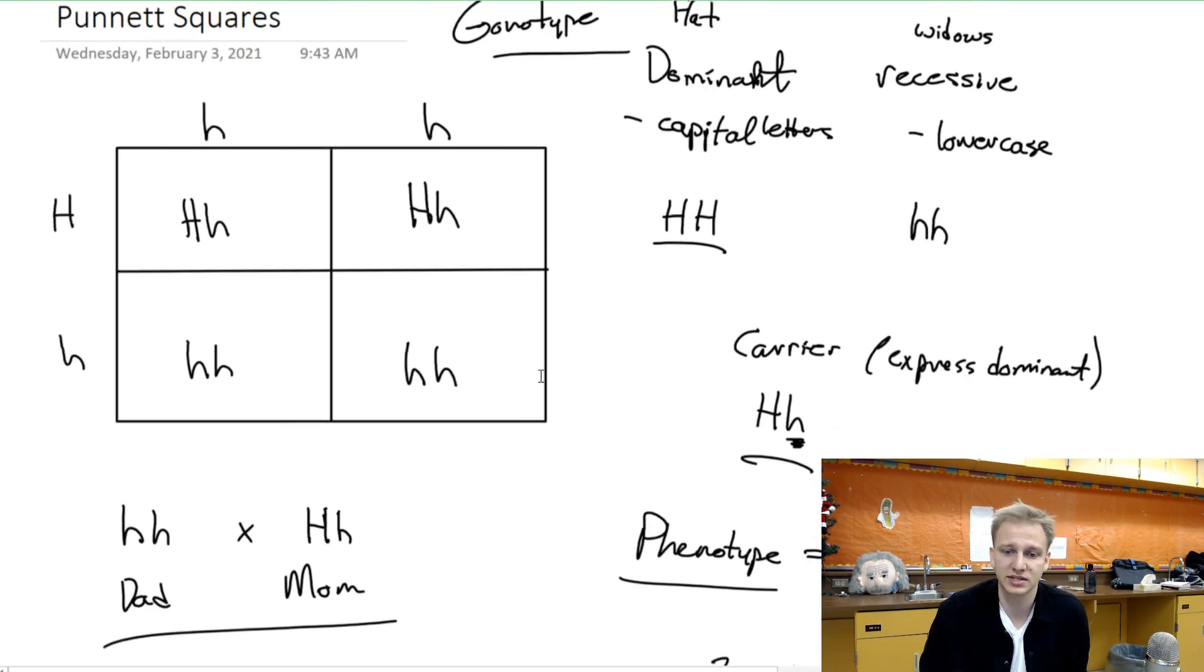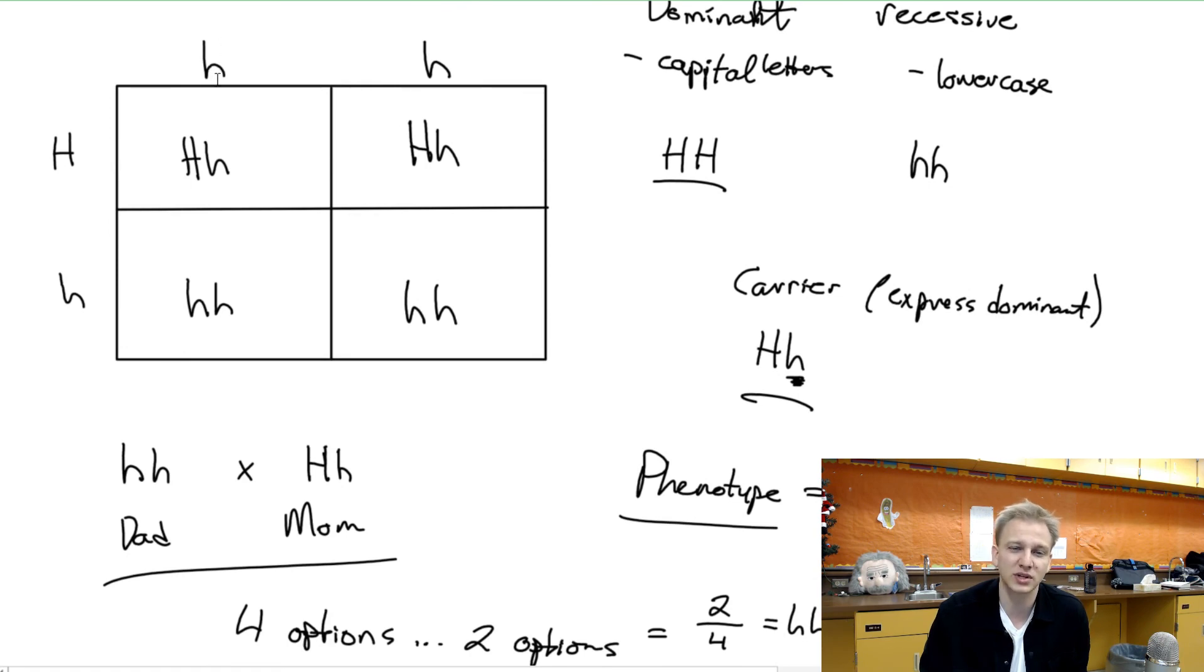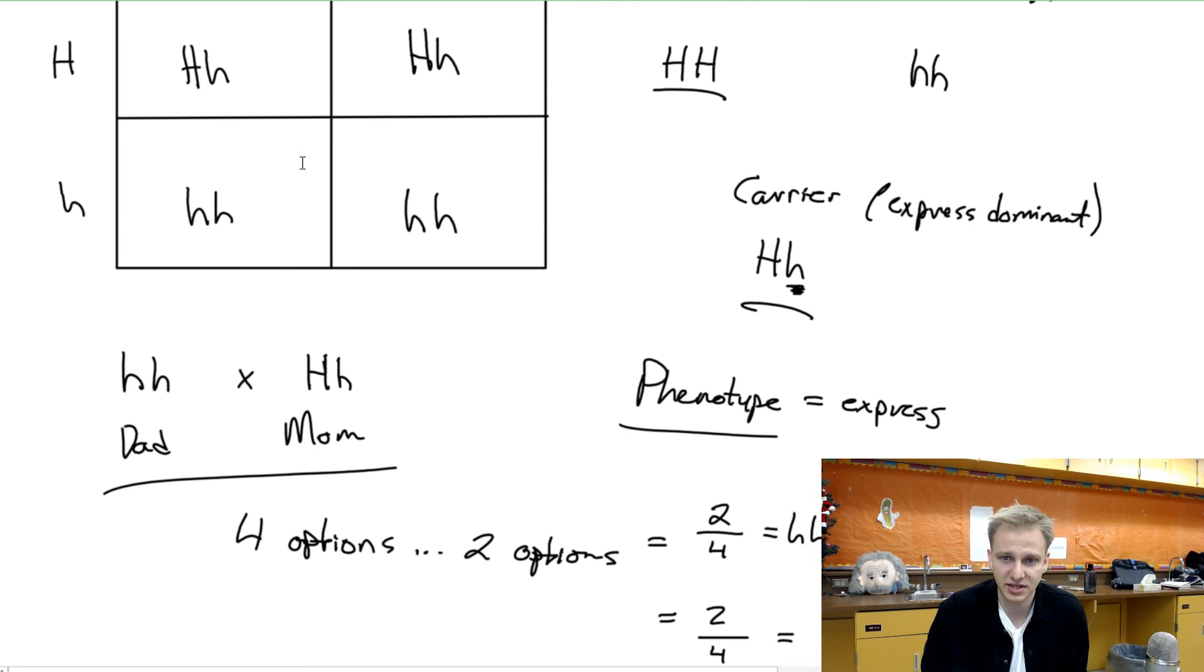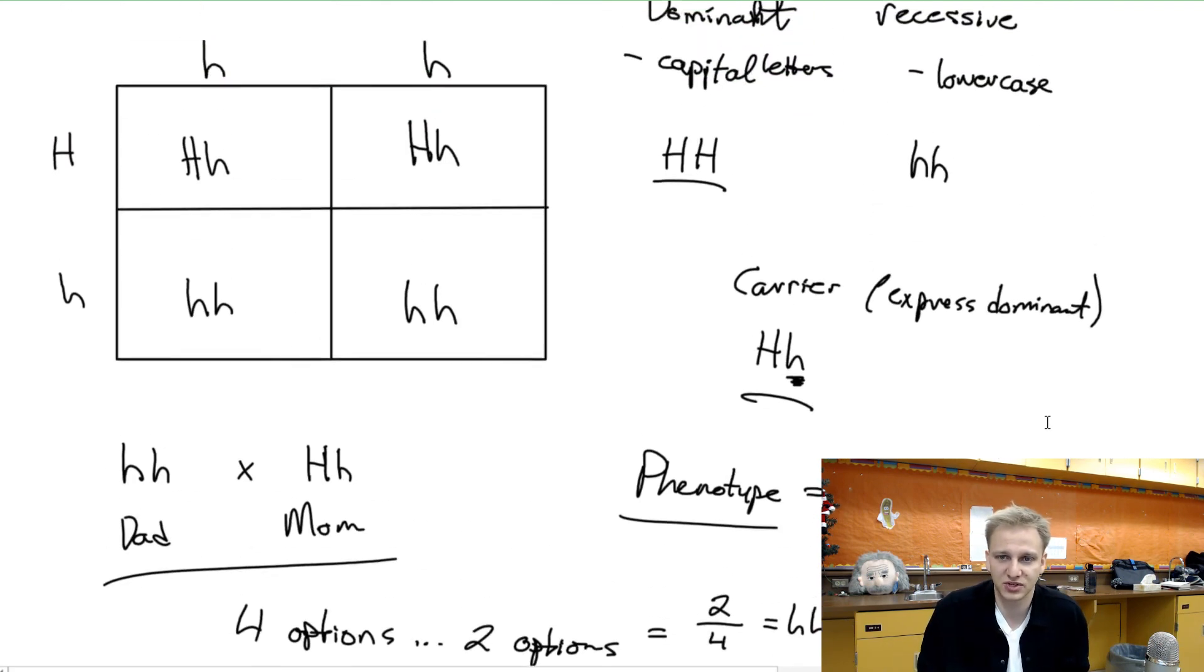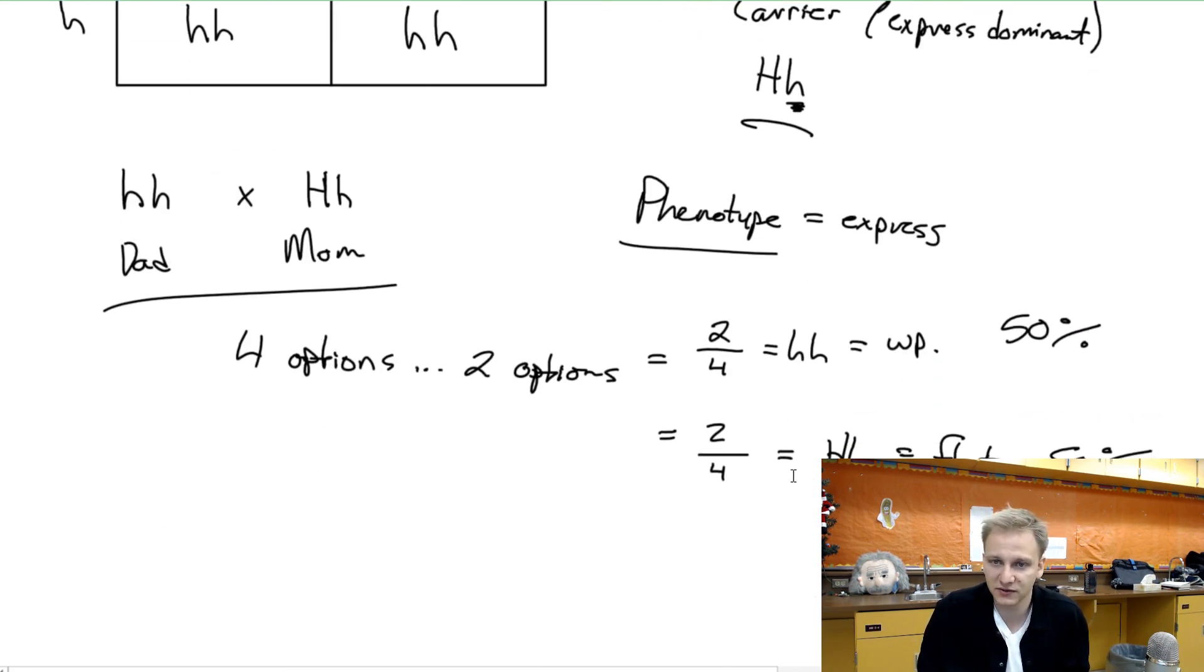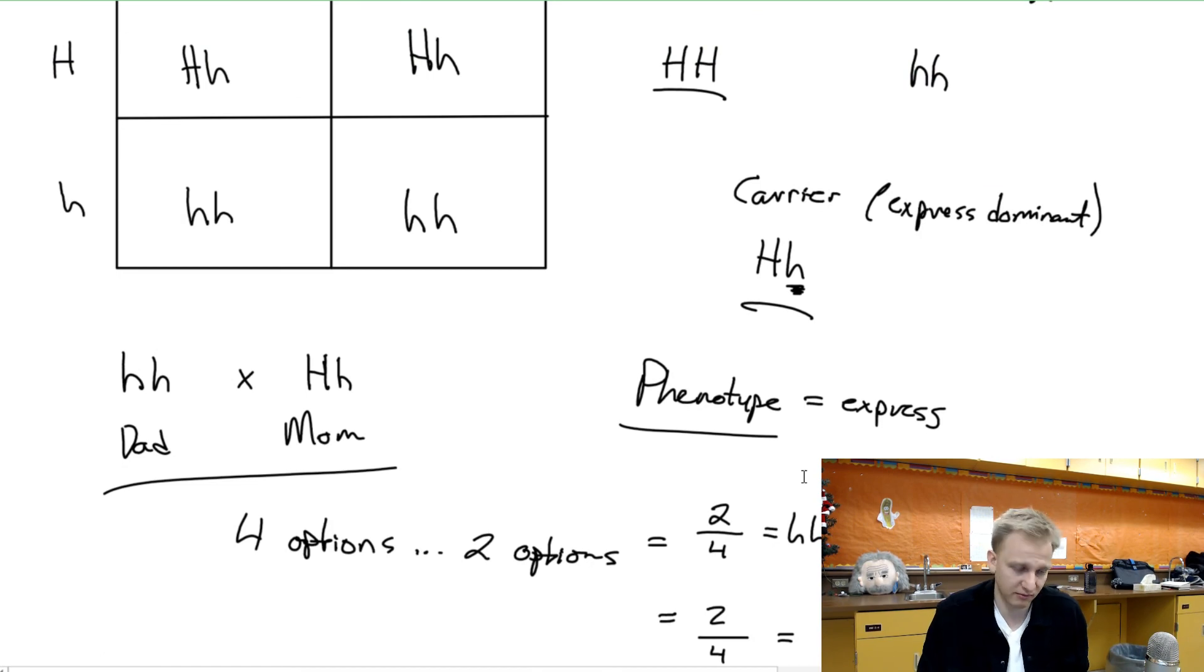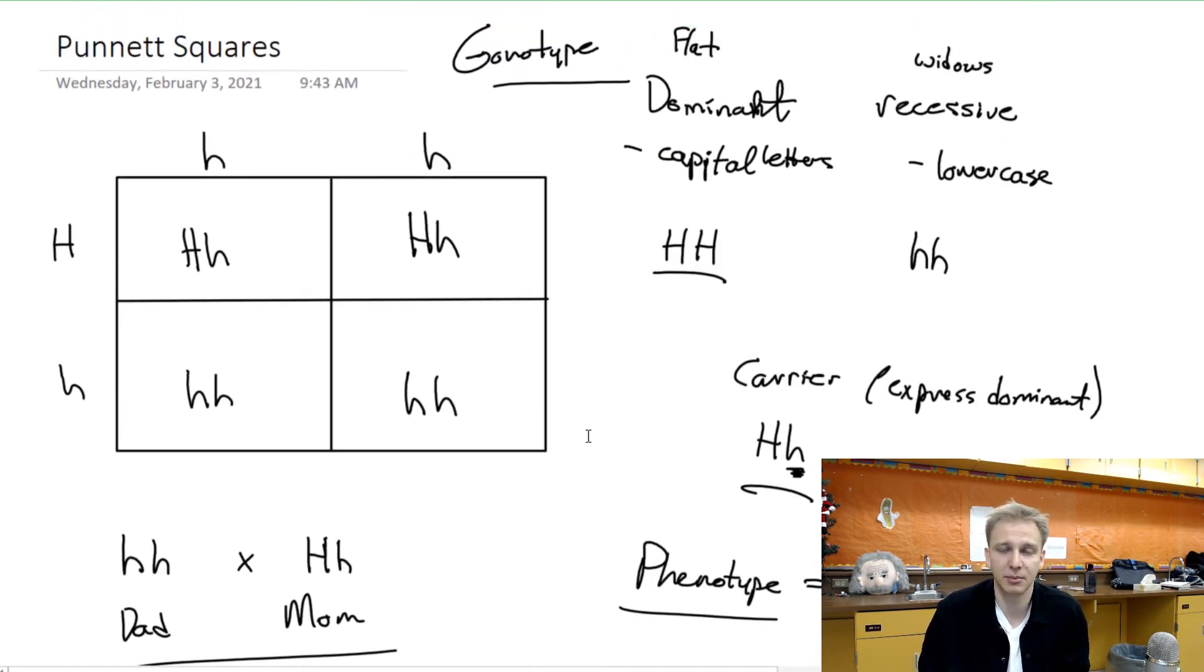And so that's how Punnett squares work. You take the mom and the dad and you do what's called crosses. And once you get those crosses, you take the results that you get and you will give a percentage of how likely it is that one of those results will occur. It won't always be 50-50, and there are some cases where we have multiple different options that are present. But this is just one quick example of Punnett squares, an intro to how to do them. Hope that made sense, hope you enjoyed. Peace.